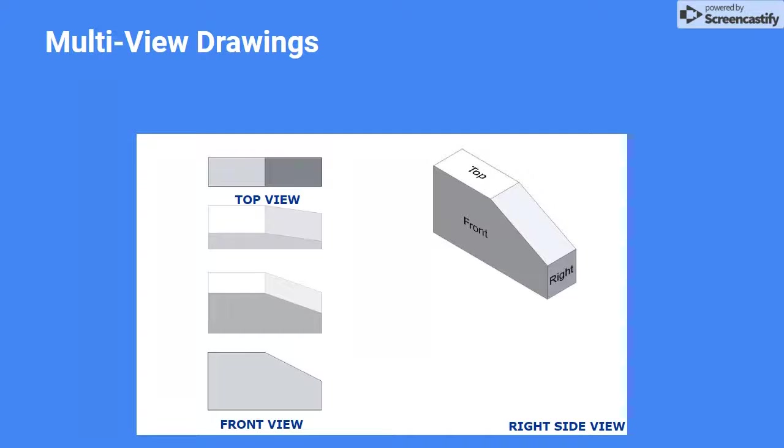Notice also that when the rotation is done correctly, the front and top views are lined up perfectly on the drawing. This is called view alignment and makes it easy for the reader to quickly identify features of the part from one view to the next. Drawings that are not aligned correctly can be hard to read.